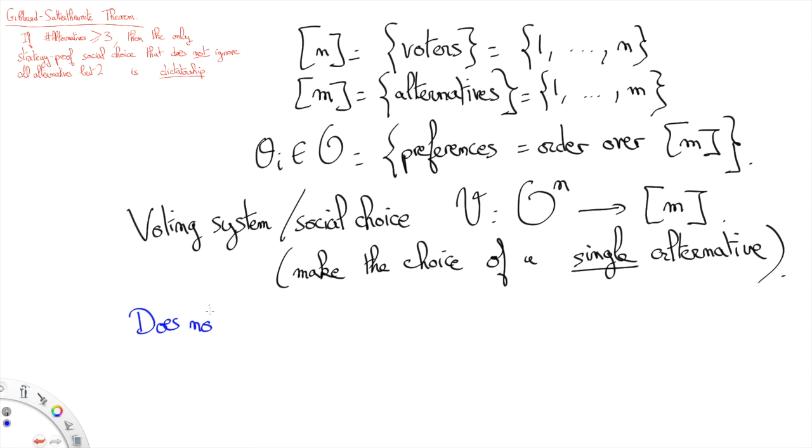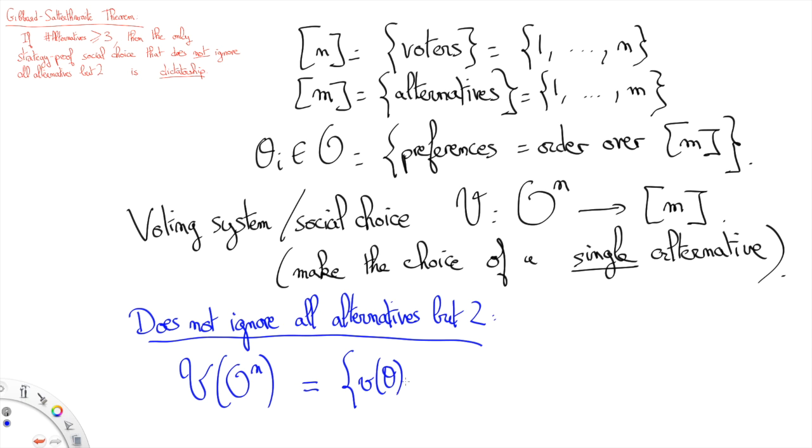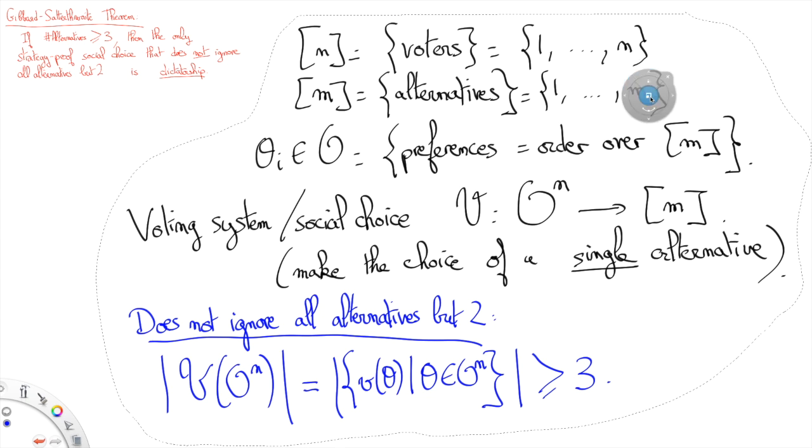The fact that the vote does not ignore all alternatives but two corresponds to saying that the image of alternatives V, that is V of O to the power N, which is the set of V of theta for theta in O to the power N, must have a cardinality at least equal to 3.